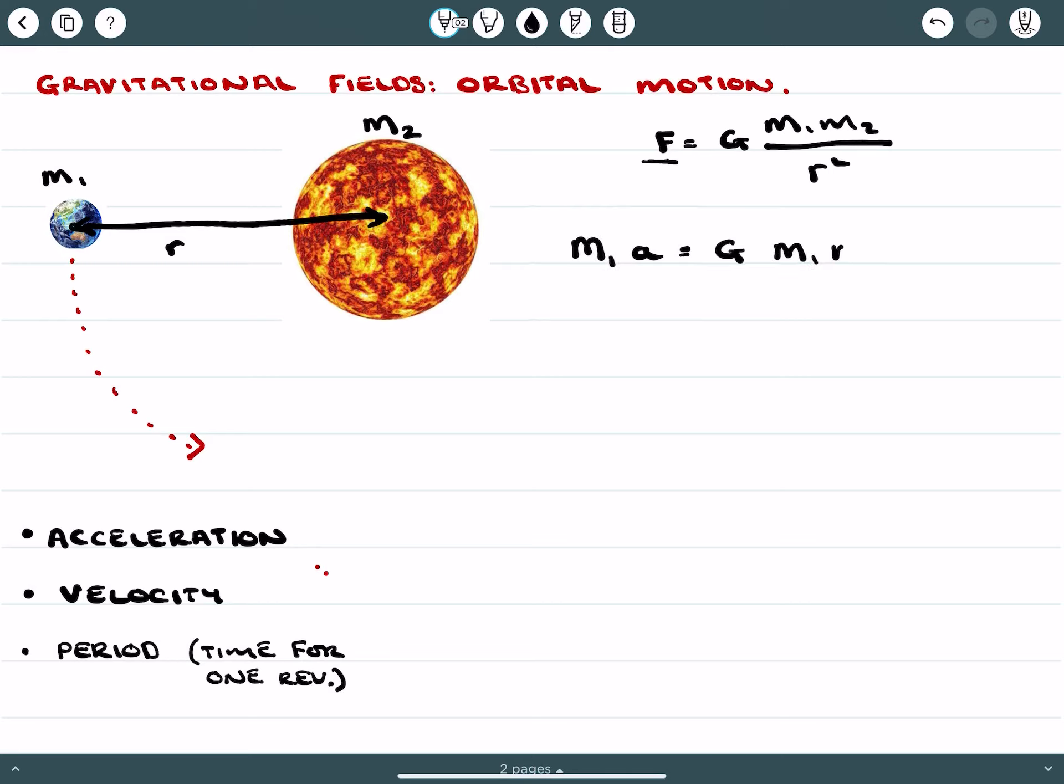And then I might just change this and say that this is mass one: m₁, m₂, all over r squared. And then we can do a simple calculation here and we generally write this in terms of our acceleration being...